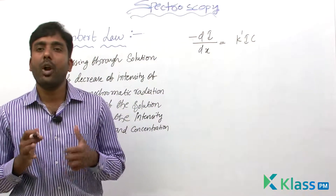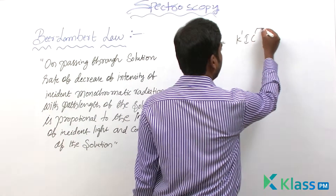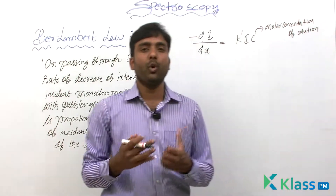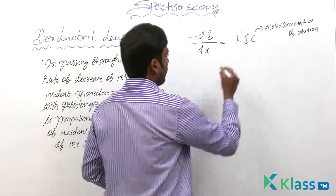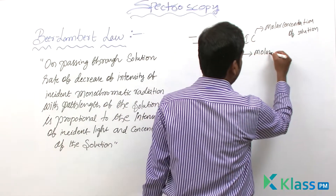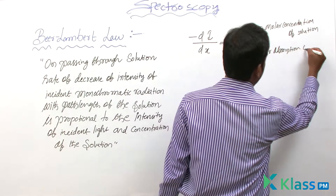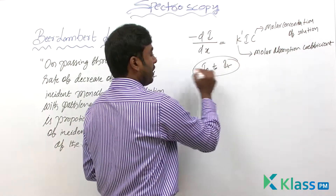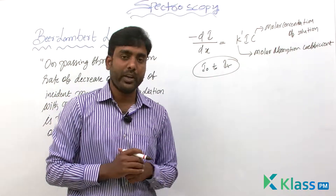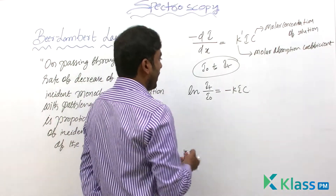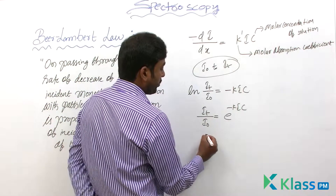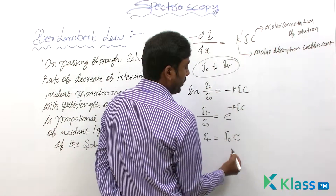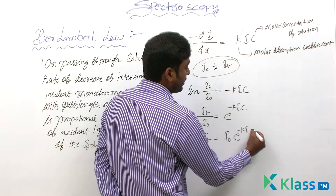Here C is the molar concentration of the solution — the molar concentration of the absorbing medium. K here is the molar absorption coefficient. Integrating between I0 and IT — the intensity of incident radiation and intensity of transmitted radiation — we get directly: IT = I0 × e^(−KlC), where l is the path length and C is the molar concentration.